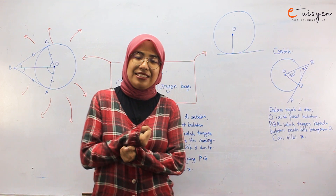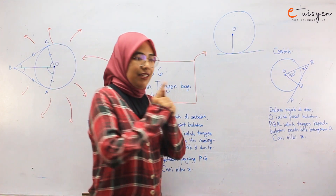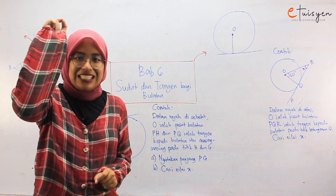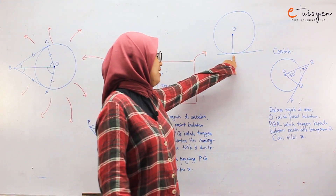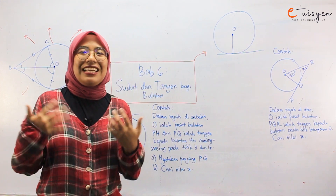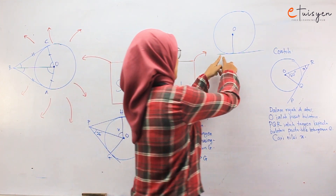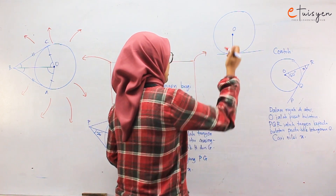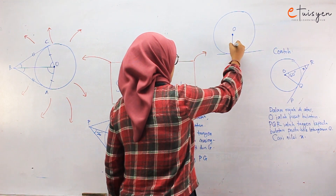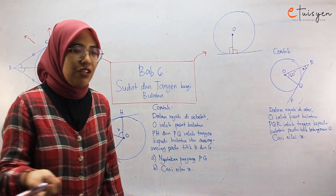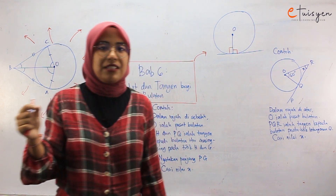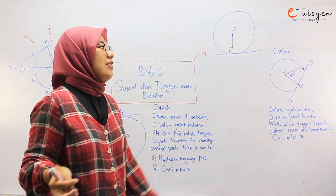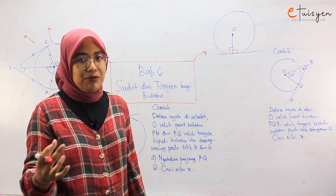Apa itu tangent? So tangent ni basically adalah satu garisan lurus yang kena sedikit je dekat bulatan — dia kena sedikit je, kena kat sini lah. So itu adalah tangent. Dan dia punya sudut dekat sini akan jadi 90 darjah, sini pun 90 darjah — itu keistimewaan dia. So apabila satu garis lurus yang kena sedikit dekat bulatan dan membentuk garis lurus tangent, sudutnya akan jadi 90 darjah.